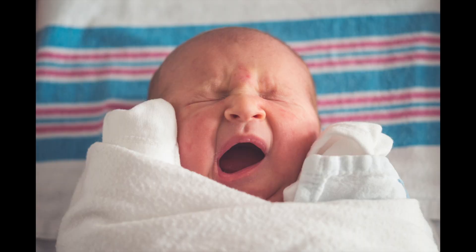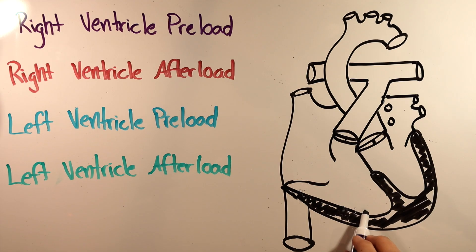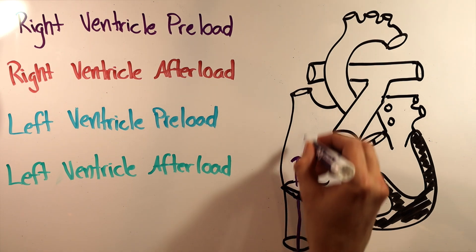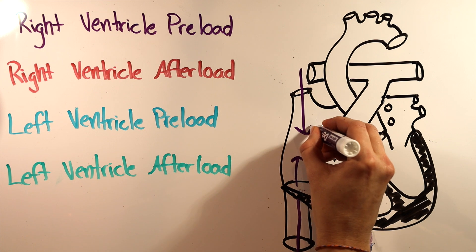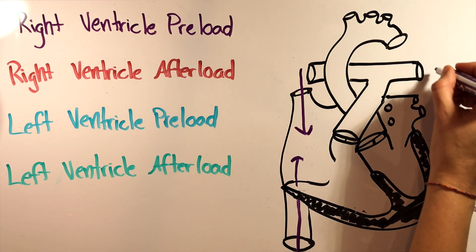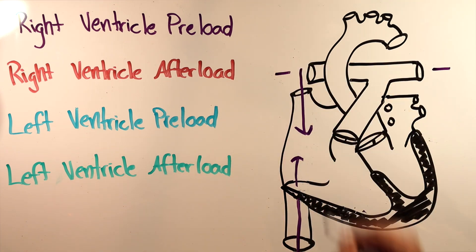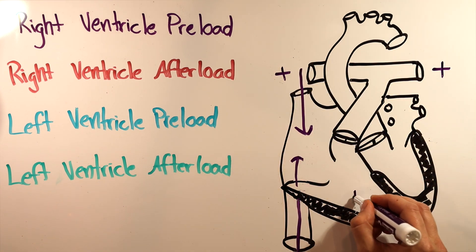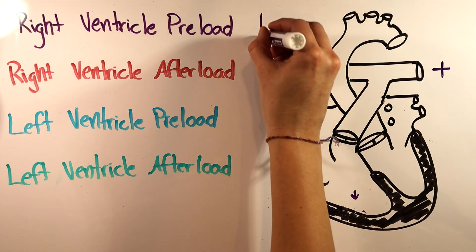So how does going from negative to positive pressure ventilation impact the right ventricular preload, right ventricular filling? Blood enters passively down a pressure gradient from the head and abdomen into the right ventricle. Breathing in and creating negative pressure in the chest draws blood in. So changing from negative to positive pressure in the chest will decrease venous return to the right atrium and decrease RV preload.